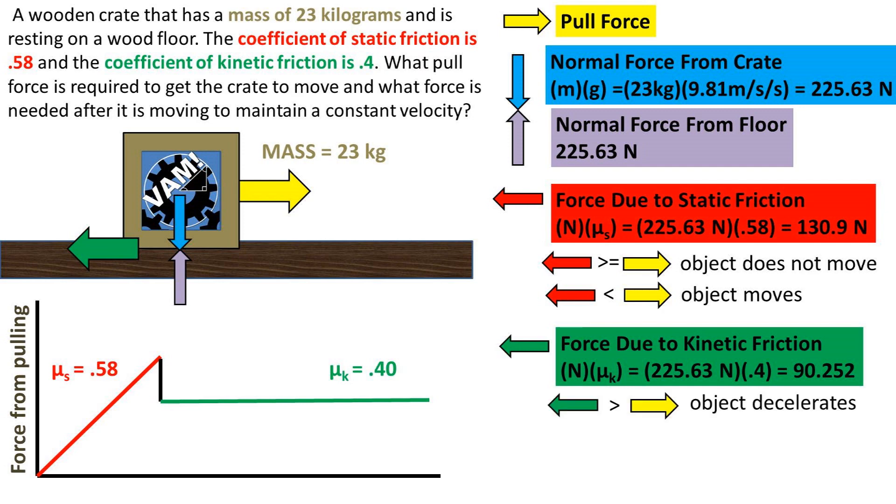So if the object is moving and the pull force is less than the force due to kinetic friction, the object will decelerate. If the object is moving and the pull force is equal to the force due to kinetic friction, then it will maintain a constant velocity. If the object is moving and the pull force is greater than the force due to kinetic friction, then the object will accelerate.